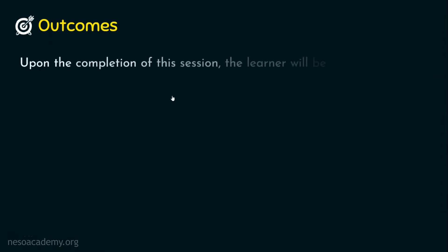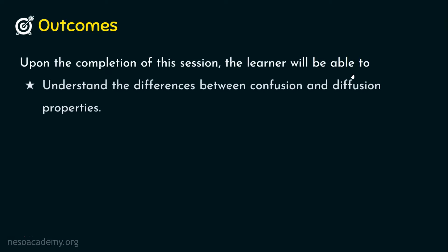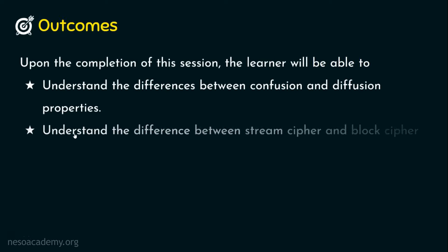Upon the completion of this session, the learner will be able to achieve two outcomes. Outcome number one: understand the differences between confusion and diffusion properties. And outcome number two: understand the differences between stream cipher and block cipher.